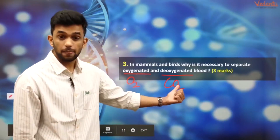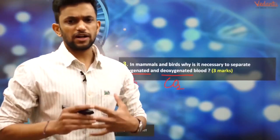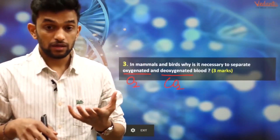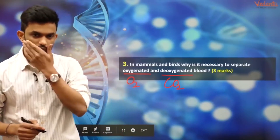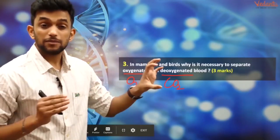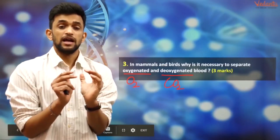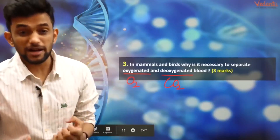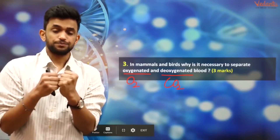So we have oxygen-rich blood and carbon dioxide-rich blood. The question asks why, in mammals and birds especially, oxygenated and deoxygenated blood needs to be separated. Please write the answer in your notebook. Mammals and birds are complex organisms with high energy requirements, so we need to keep oxygen and carbon dioxide separate.